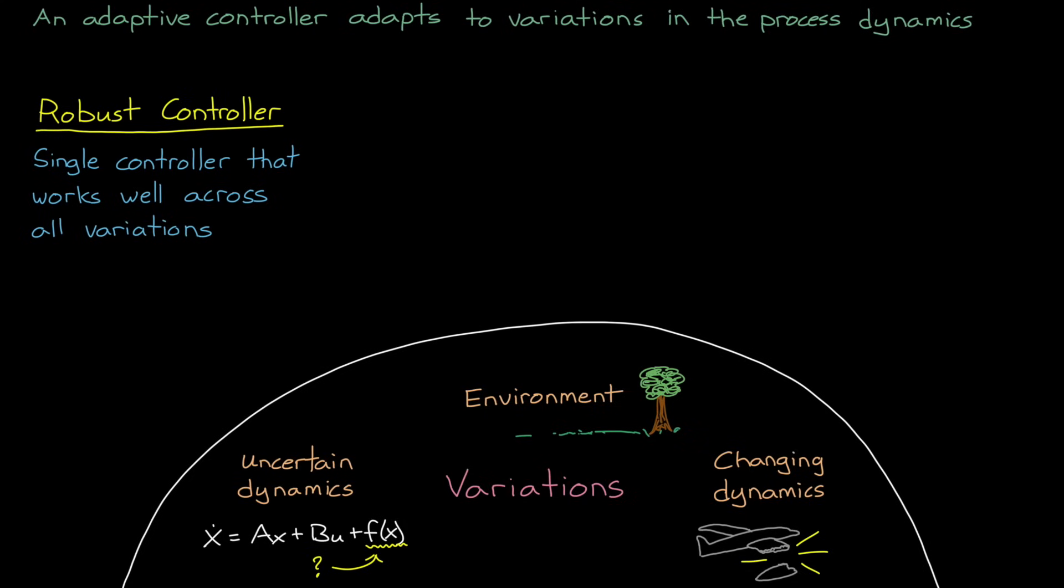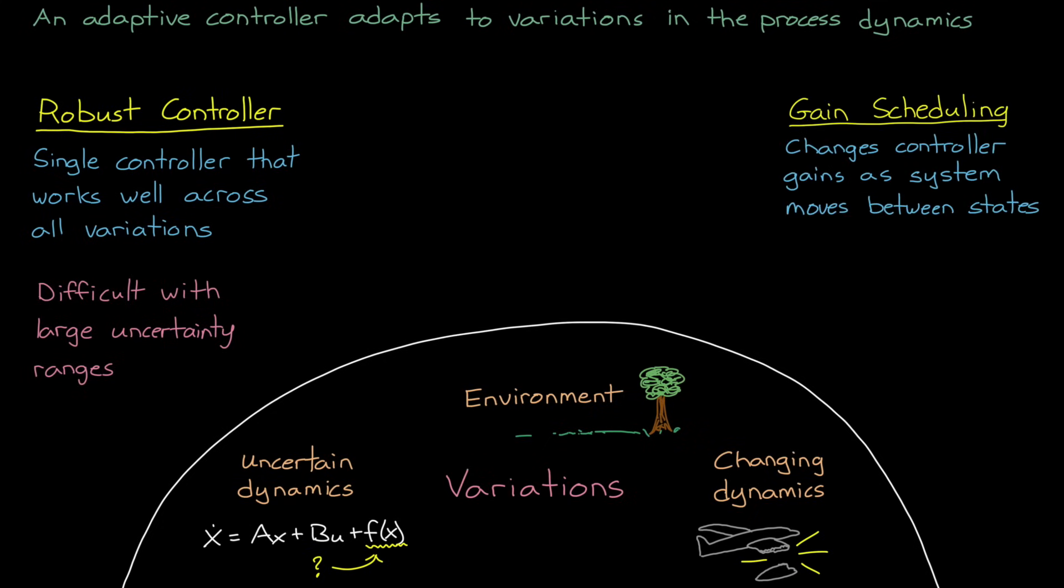One way to do this is with a robust controller. This means that the controller is designed with enough stability and performance margin that it works sufficiently well across the entire range of expected variations. However, finding a single robust controller that can meet requirements becomes more difficult as the range of uncertainty grows.